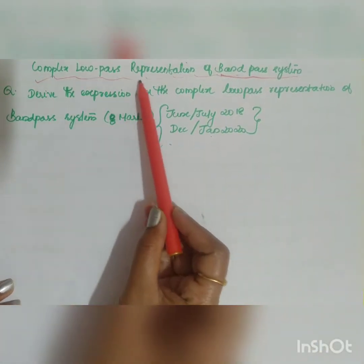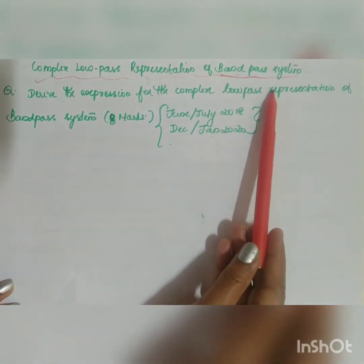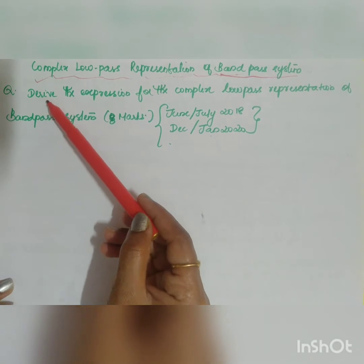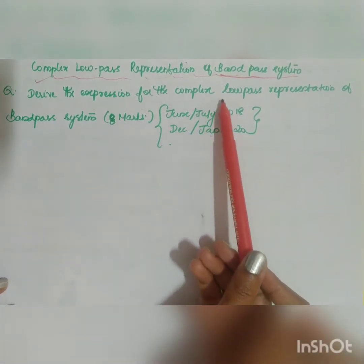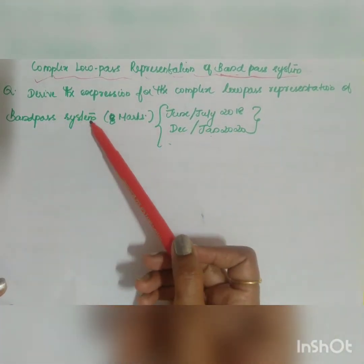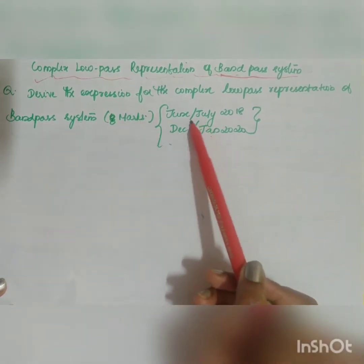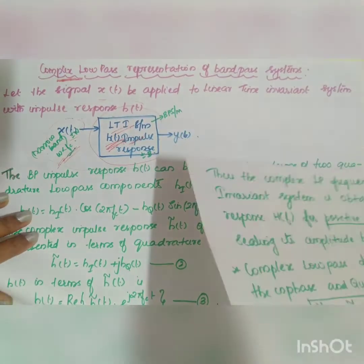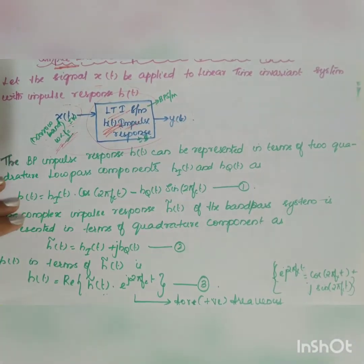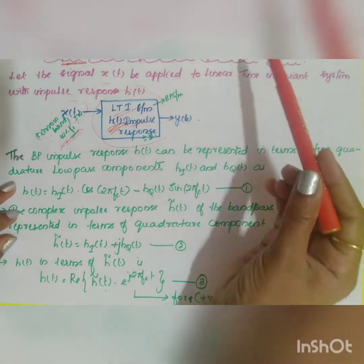The next topic is complex low pass representation of band pass systems. A frequently asked question is: derive the expression for the complex low pass representation of a band pass system, which is asked for eight marks in June/July 2018 and December/January 2020. So starting off the derivation of the complex low pass representation of band pass systems.